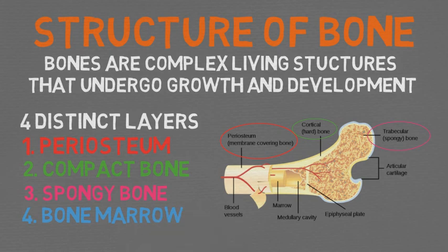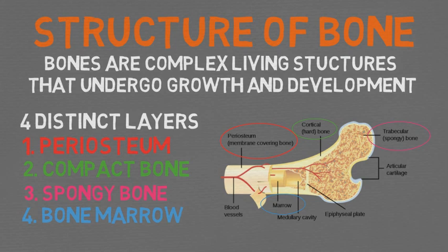The fourth layer is bone marrow, which fills the gaps between the spongy bone. Bone marrow is the primary site of new blood cell production. There are two types: red bone marrow, which produces most of the body's blood cells, and yellow bone marrow, which stores fat that can serve as an energy reserve.